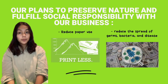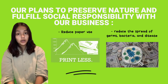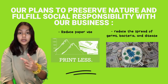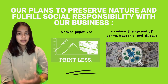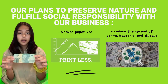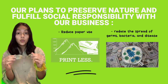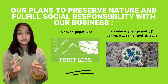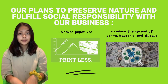Our plans to preserve nature and fulfill social responsibility are: first, reduce paper use with the cashless system. Second, reduce the spread of germs, bacteria, and disease. For example, with physical paper money, you cannot see the bacteria, but there is likely a lot of bacteria on it because many people have handled it. That is why we want to reduce paper use with the cashless system.